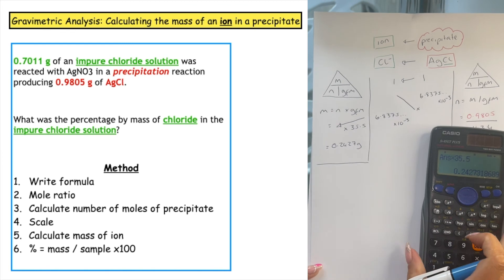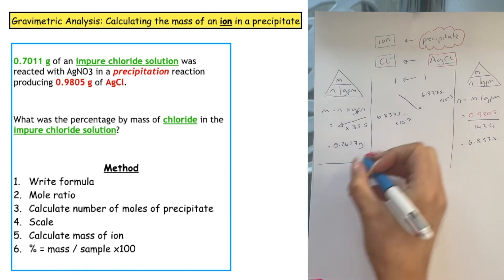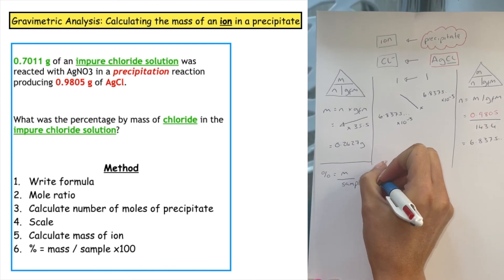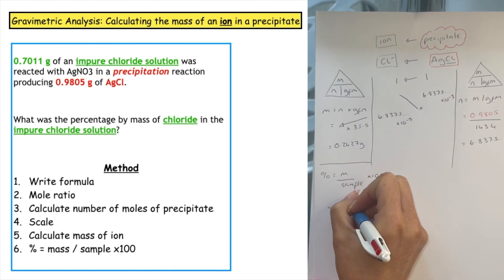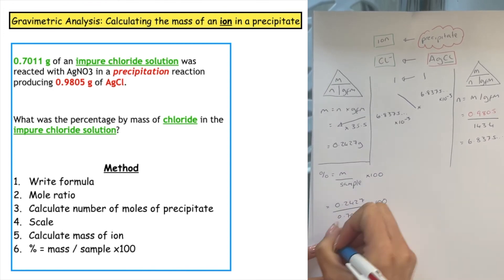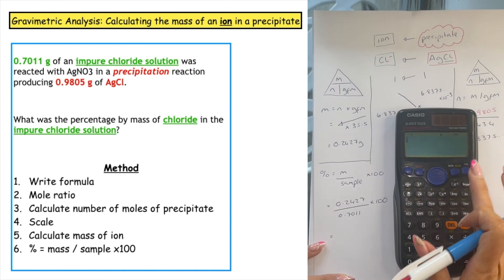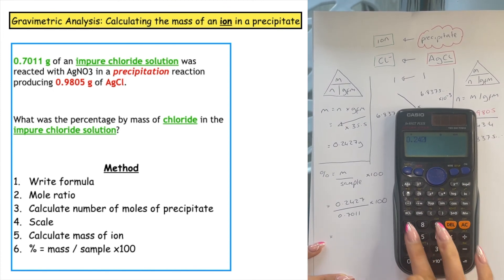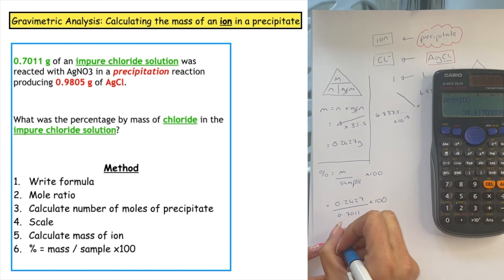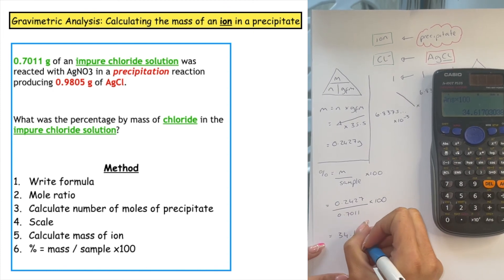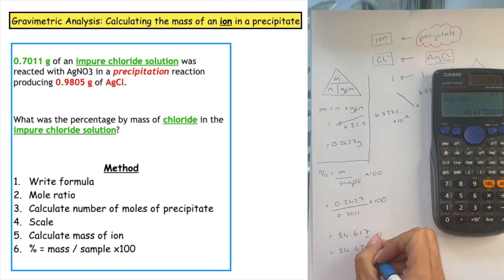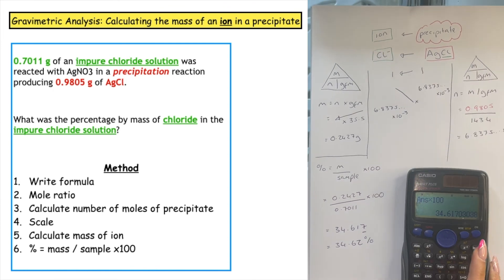Because the question wants the percentage by mass, we do: percentage = (mass / sample) × 100, where the sample is the original solution the chloride ion was found in. So that's 0.2427 divided by 0.7011, times by 100. That gives a final percentage of 34.617, which rounded to four significant figures is 34.62%.